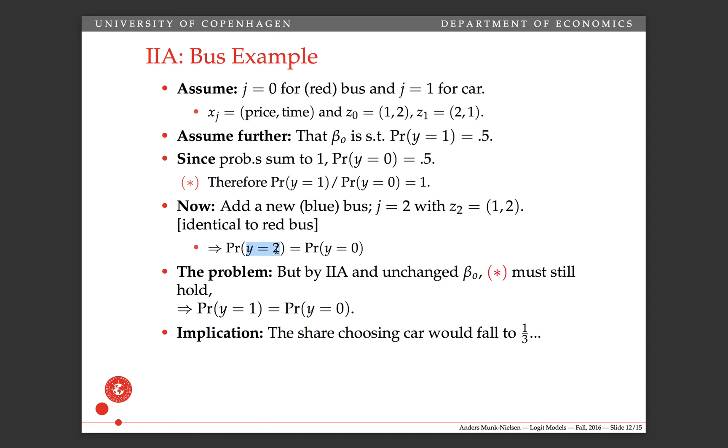Now we know that y equals 2 is equal to probability of y equals 0, which is equal to probability of y equals 1. They're all the same. So they must all have a third of the probability mass. And this is not in itself weird, but the strange thing is that we've added an alternative that's identical to the red bus, namely the blue bus. And now the probability of choosing a car fell from a half to a third.